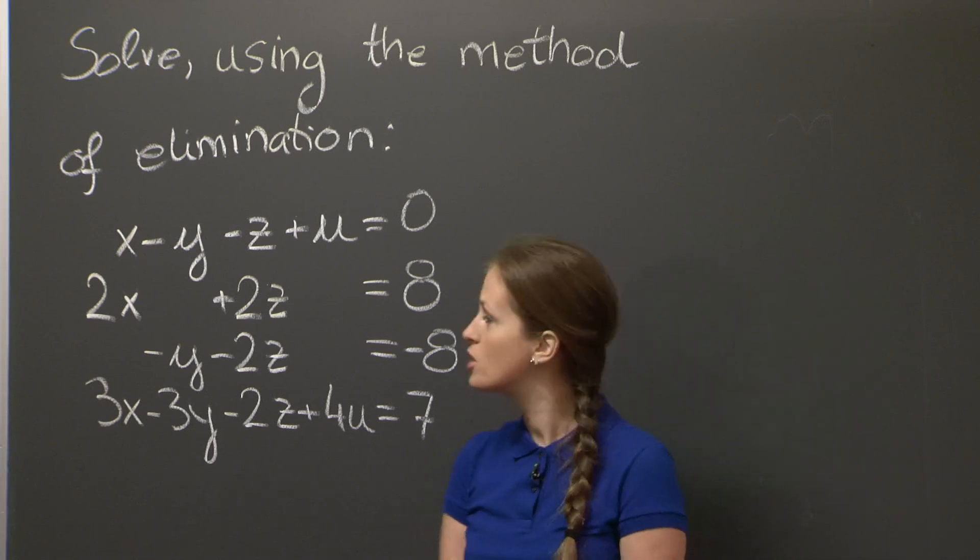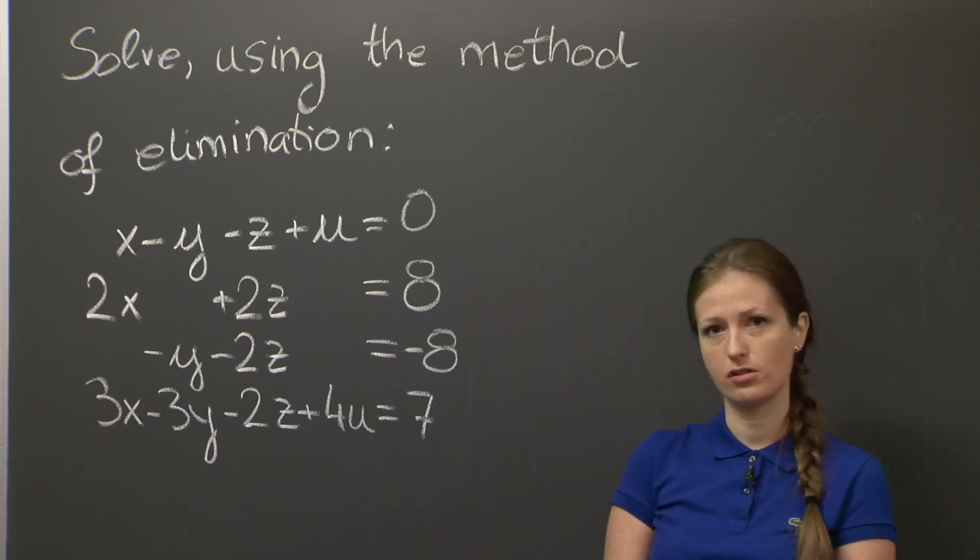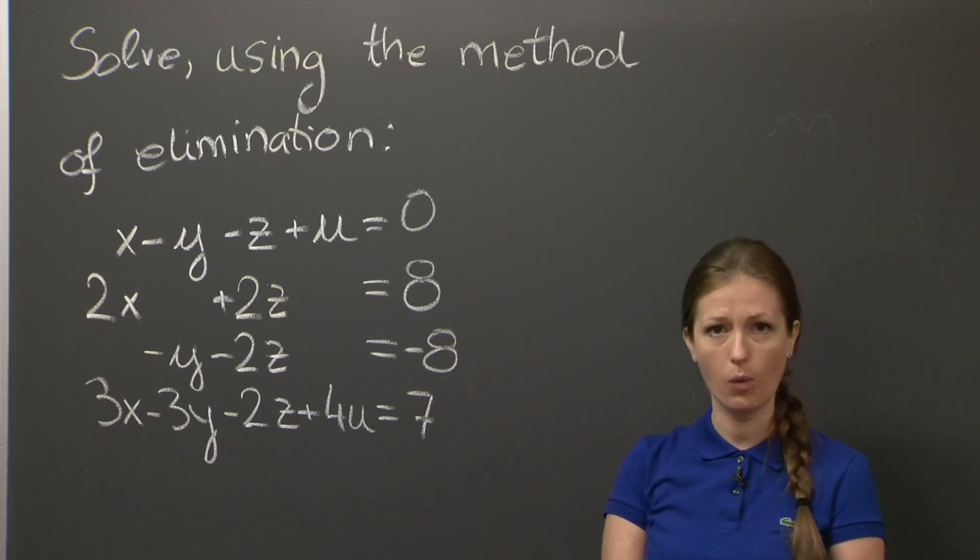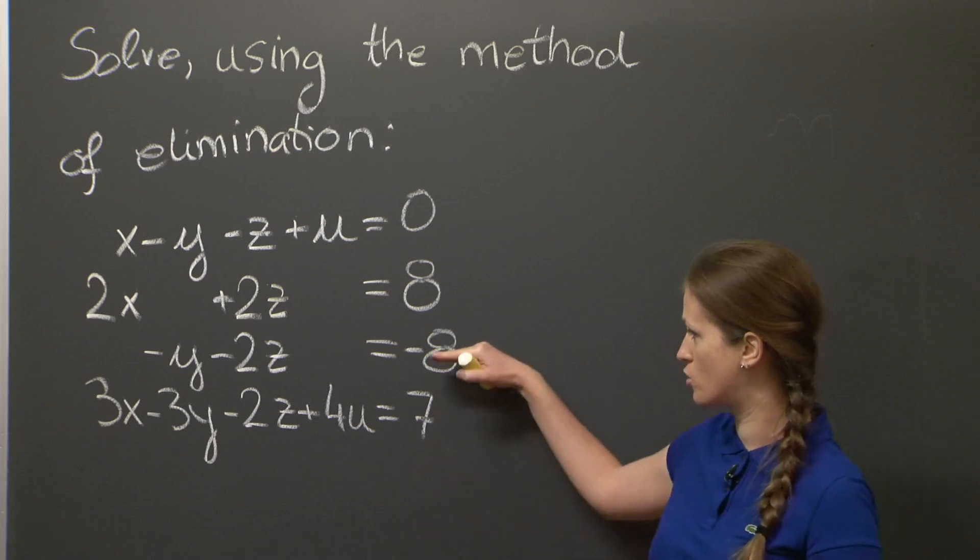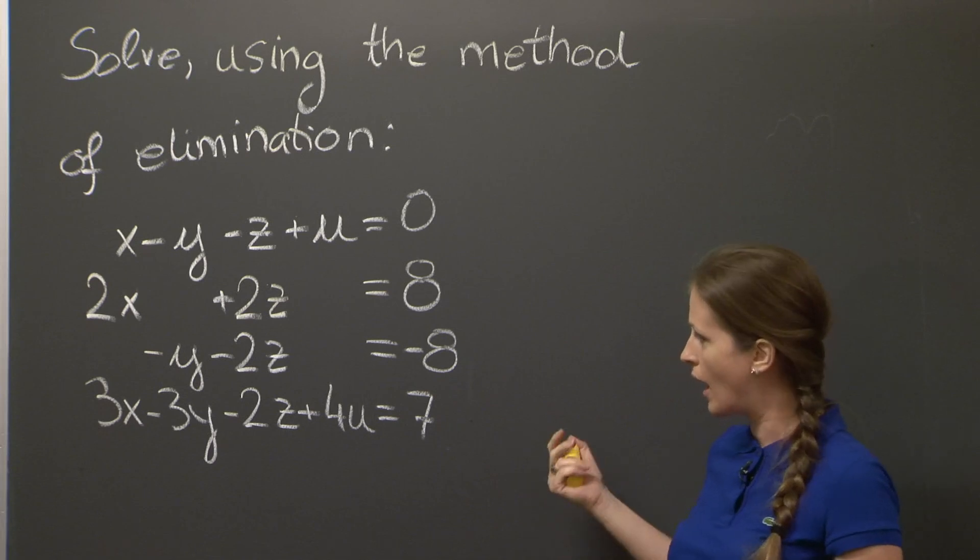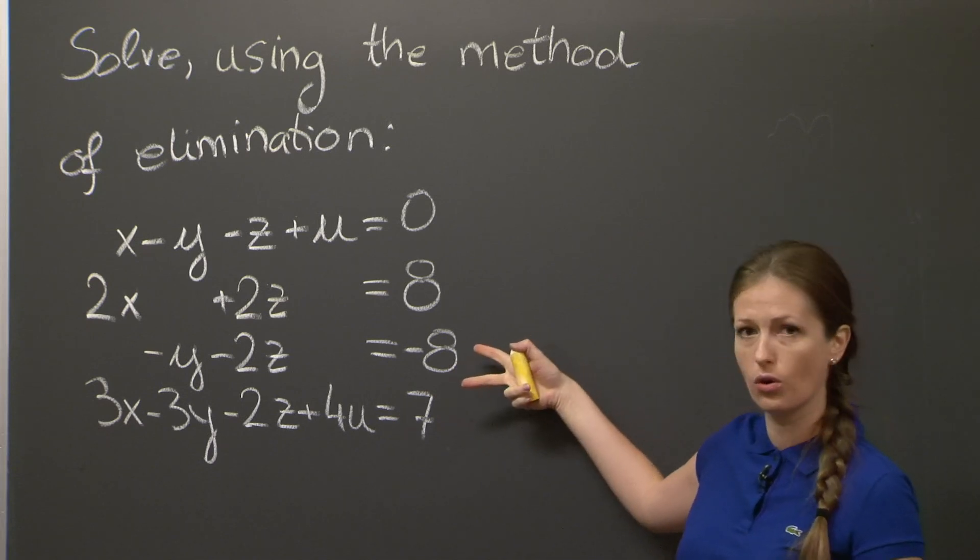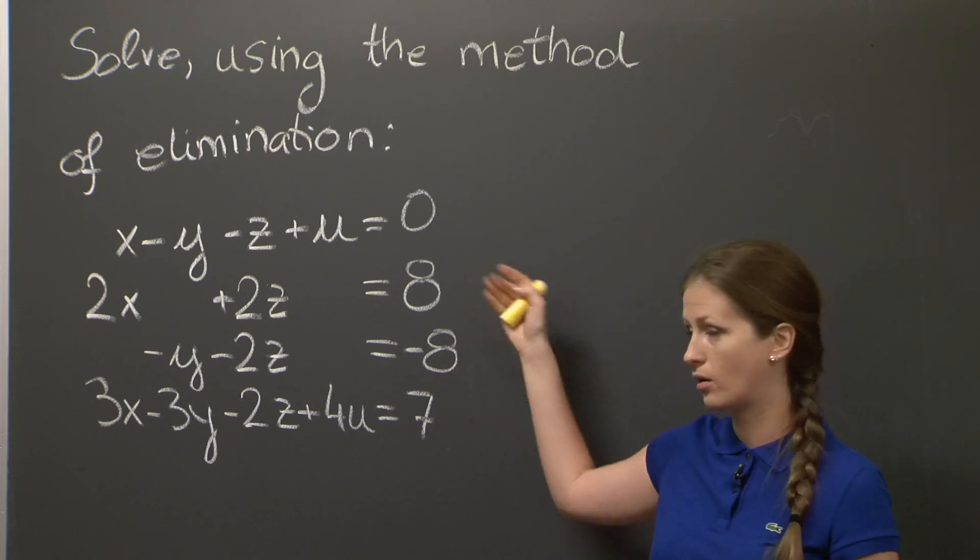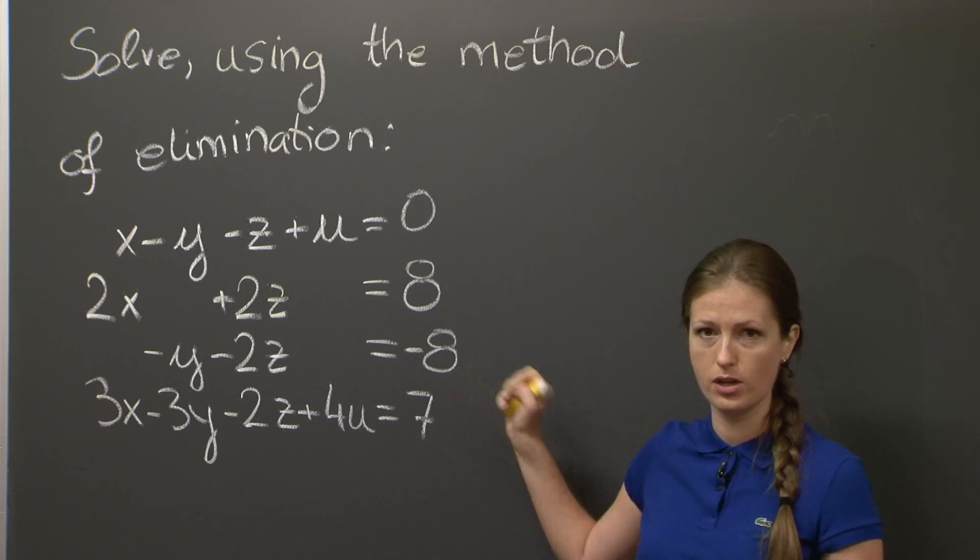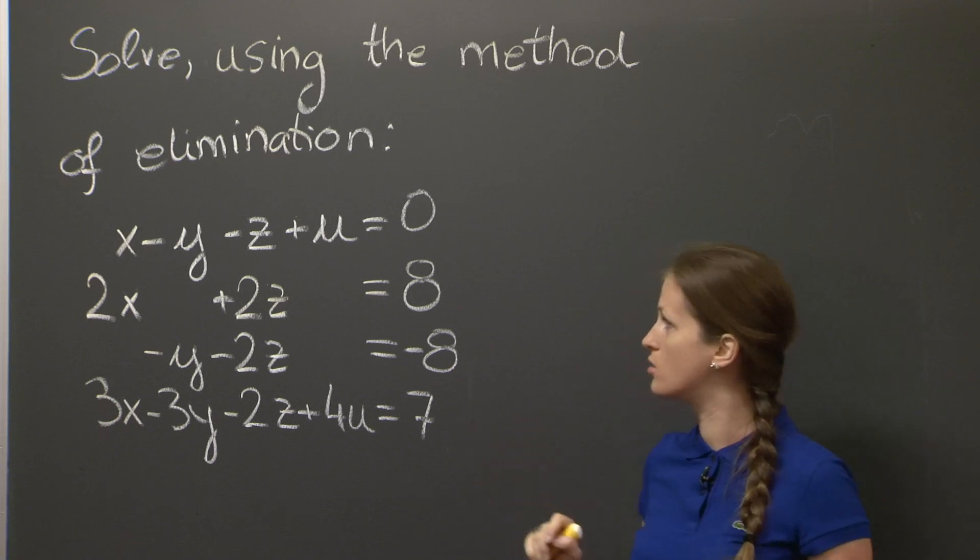And we're back. So the method of elimination, if you remember it from class, consisted of replacing this system with an equivalent system, equivalent meaning they have the same solution, by a series of row operations. Row operations are not supposed to change the solution to the system, and include, for example, exchanging the order of two equations, multiplying an equation with a non-zero number, and adding a non-zero multiple of one equation to another. So let's do that.